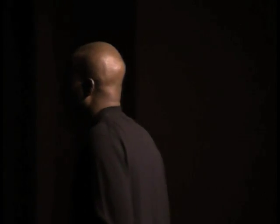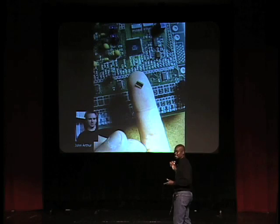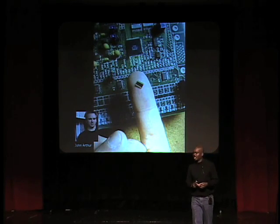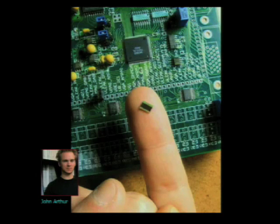We've used this analog approach to model eight different parts of the brain. This is the chip — it was designed by John Arthur, a postdoc in my lab. With just three-quarters of a million transistors, it's as powerful as one of those racks you saw, and it uses a million times less electricity.